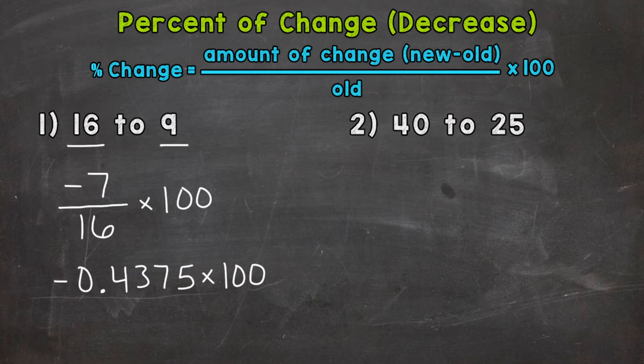Now when we multiply a decimal by 100, we can just move the decimal twice to the right. So 1, 2. And we end up with an answer of negative 43.75 percent. And again, that negative represents a decrease.